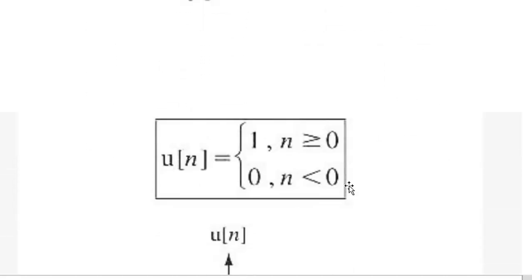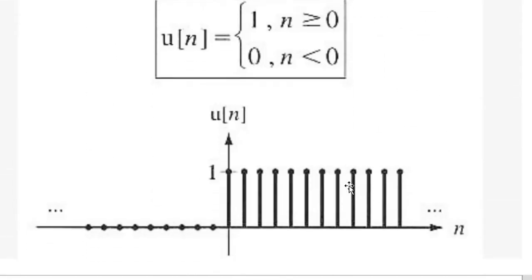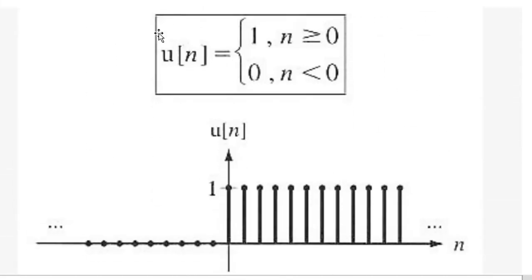The unit step function in discrete time is defined as u(n) equal to 1 for n greater than or equal to 0. For integer values of n, the samples are 1, and it is 0 for n less than 0. So this is how the unit step function is defined.